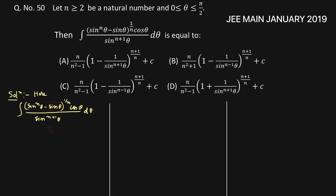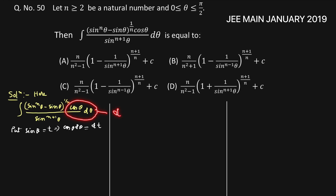Let's see the solution. We put sin theta equal to t. Then we get cos theta d theta equal to dt. Therefore, sin theta is written as t, sin to the power n plus 1 theta is written as t to the power n plus 1, and cos theta d theta is written as dt. The integration becomes the integral of t to the power n minus t to the power 1 by n, divided by t to the power 1 plus n, dt.